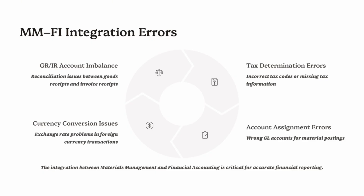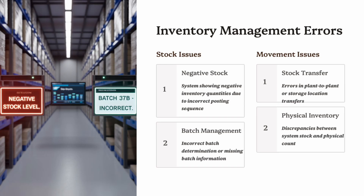To fix these issues: regularly reconcile GR-IR with reports, ensure valuation classes and account determination are configured correctly, validate tax codes during master data and PO creation, and train consultants to review FI postings after MIRO using MIR4. By mastering FI integration, you don't just fix MM errors — you become the consultant who bridges logistics and finance.